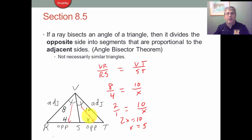One thing to note here with the Angle Bisector Theorem is that these two triangles are not necessarily similar triangles. They could be, depending on what the big triangle is, but generally that's not going to be the case.